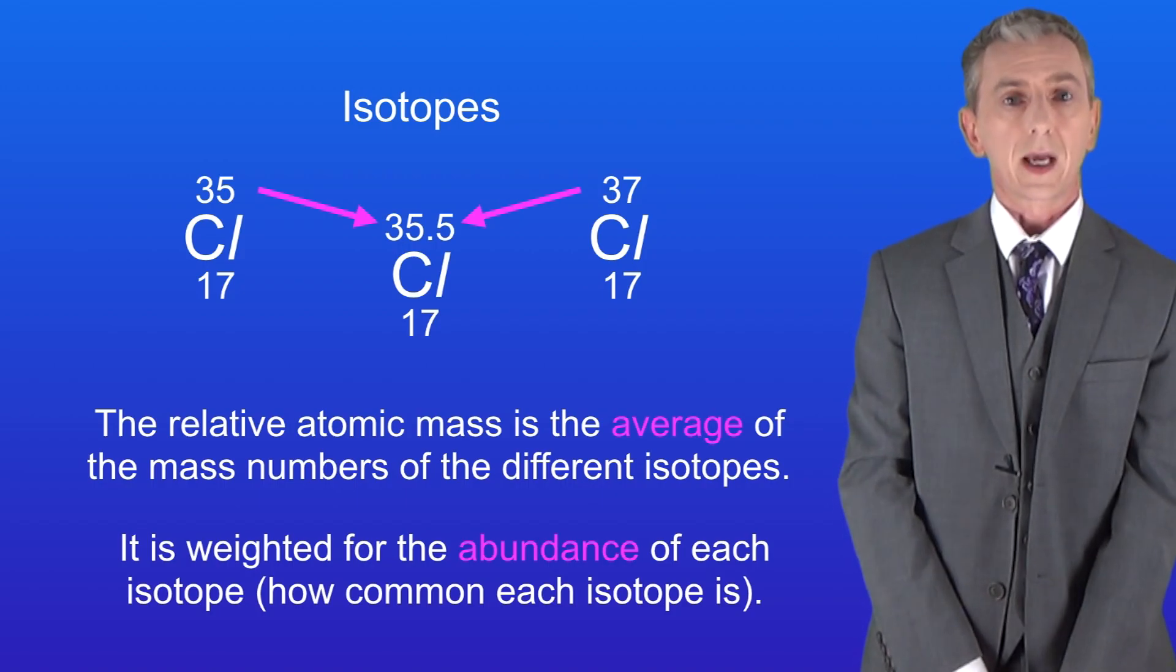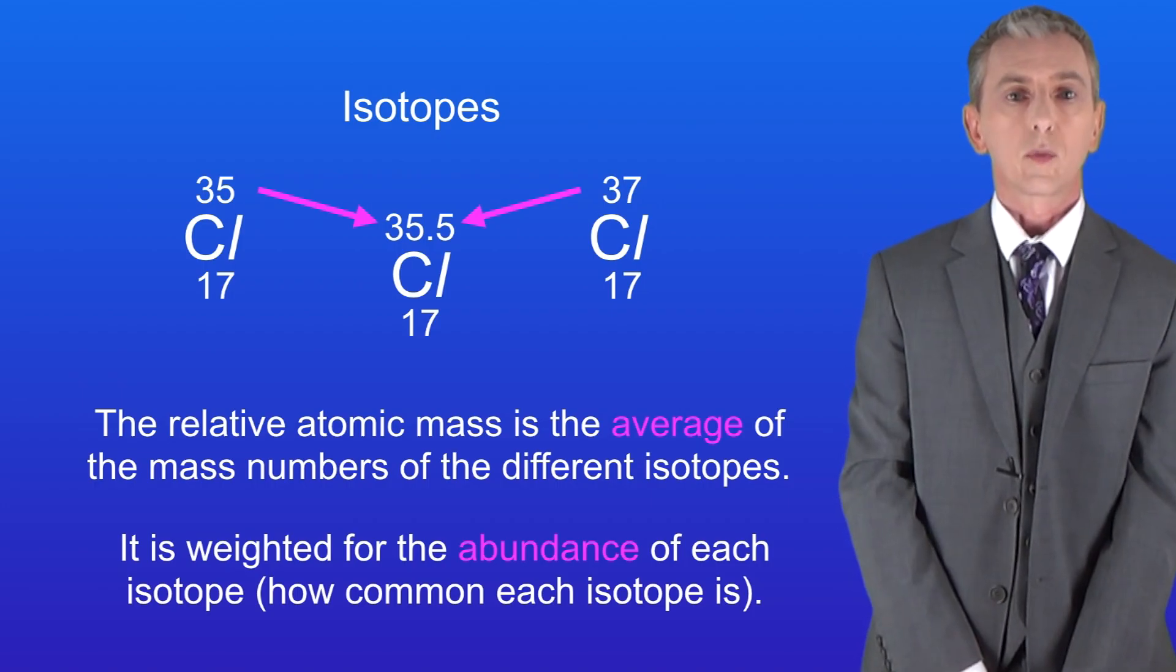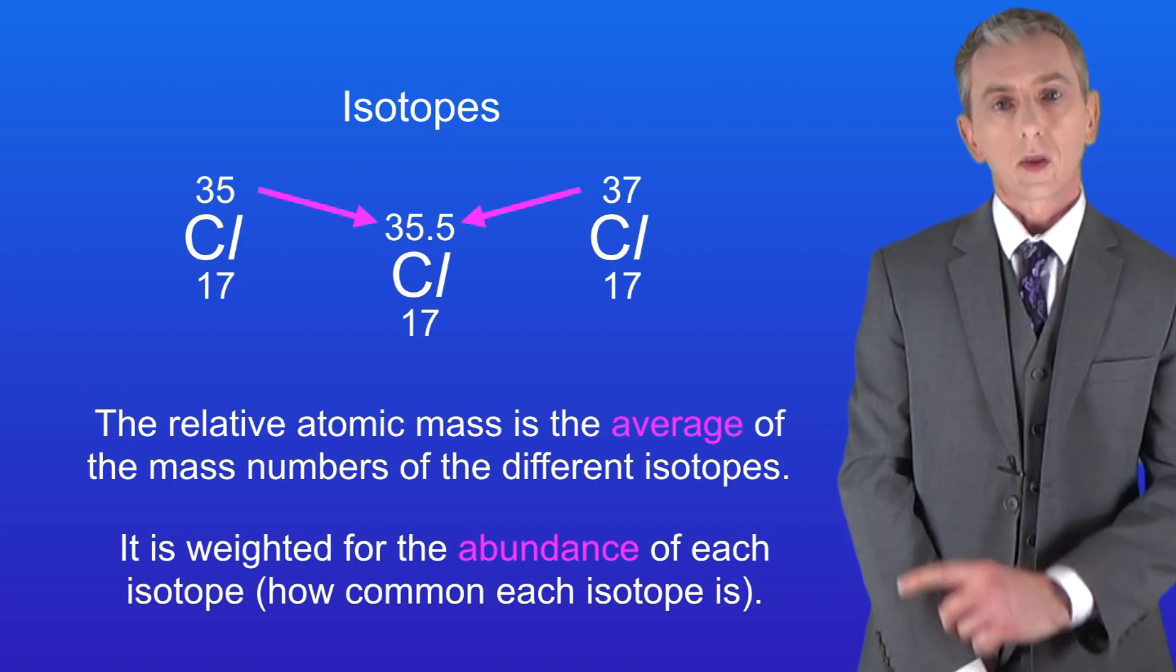Now in the exam you could be asked to calculate the relative atomic mass for an element based on its isotopes. So let's look at how we do this. We use this equation.